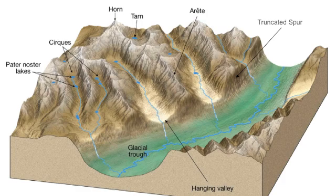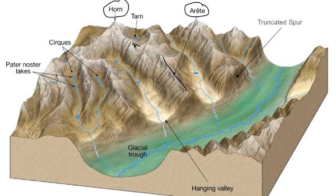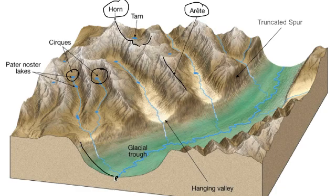So what happens after all the glaciers melt? What do you wind up with? How does the shape of the land get affected by glaciers that used to be there? Quick review: here's our horn — the top jagged peak where all those arêtes met. Here's an arête; we can trace them all out over here. We have cirques — those bowl-shaped depressions — and our glacial trough, the big U-shaped valley where the glacier used to be. Here's our truncated spur.